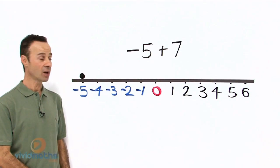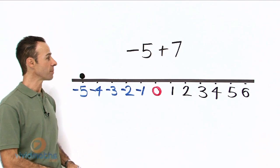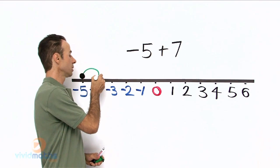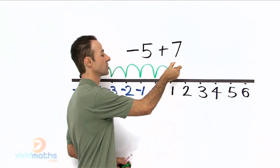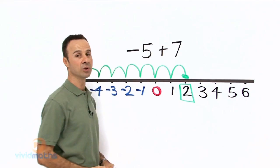So let us move to the right 7 times from here. Starting at minus 5, we are going to jump up 7 times along the number line: 1, 2, 3, 4, 5, 6, 7. So we arrive at number 2.